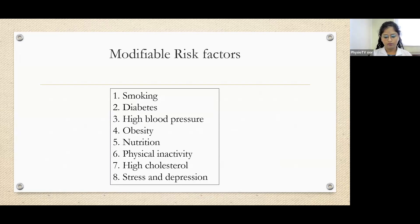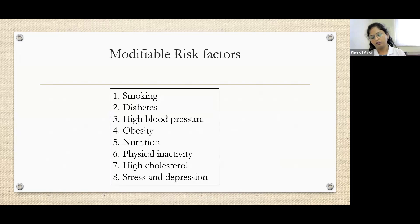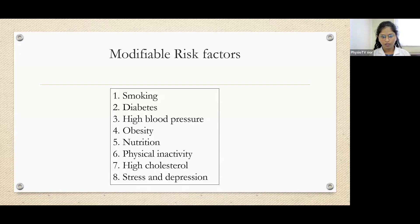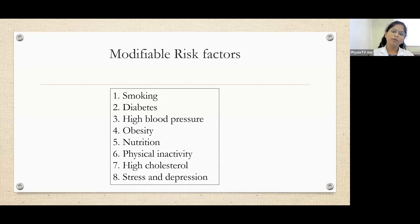Why are these factors modifiable? Because we can change them. For example, smoking — we can say the person will quit smoking. That is a modification of that risk factor. For diabetes, we can give treatment. We can reduce blood pressure, increase physical activity, or make the patient more active to reduce obesity.